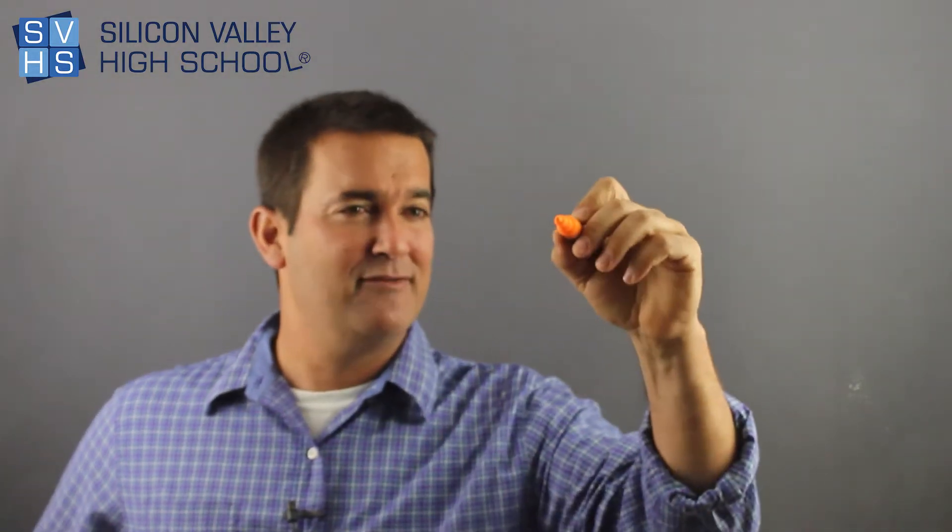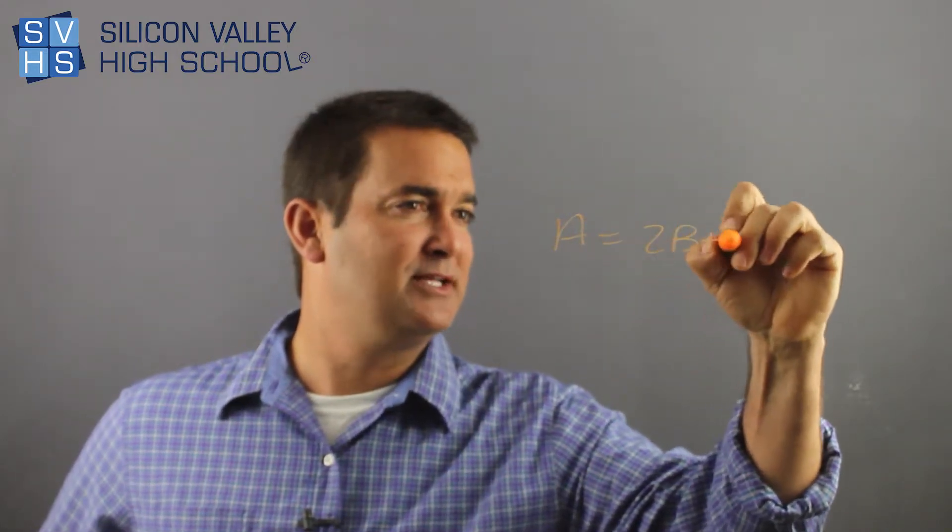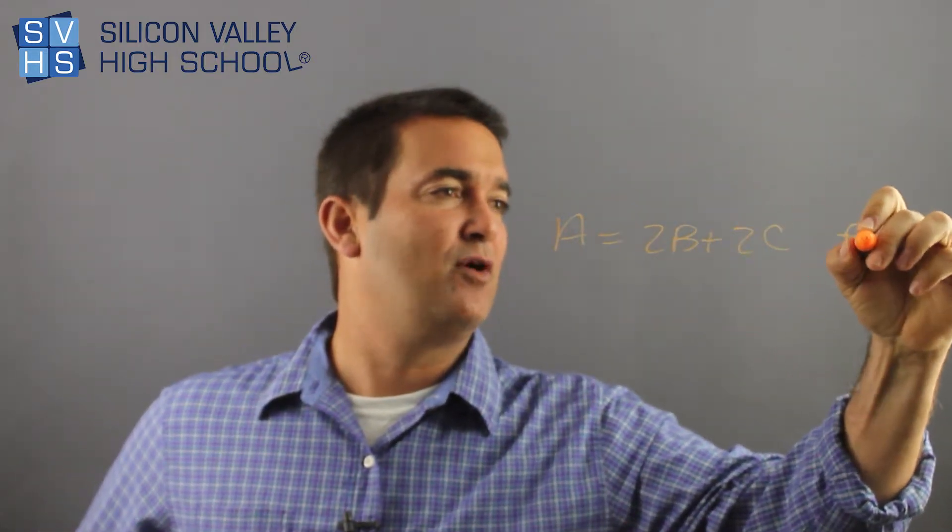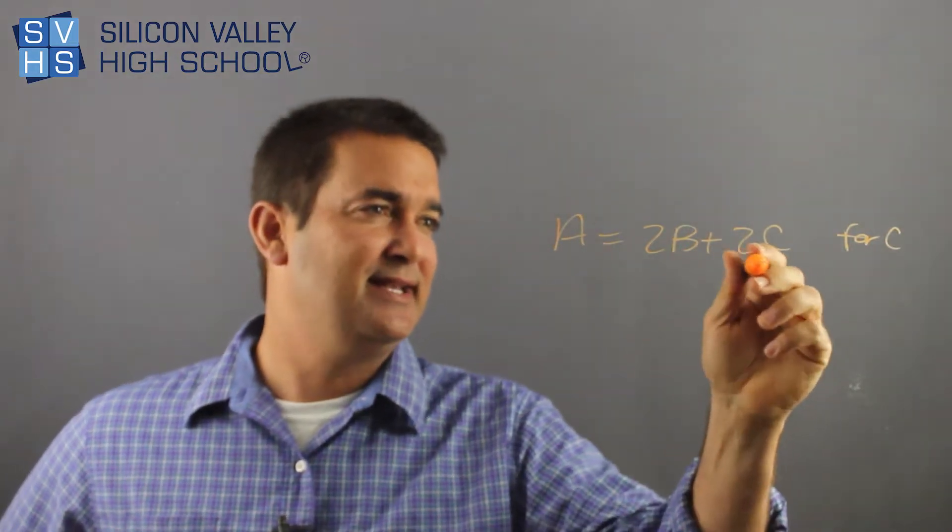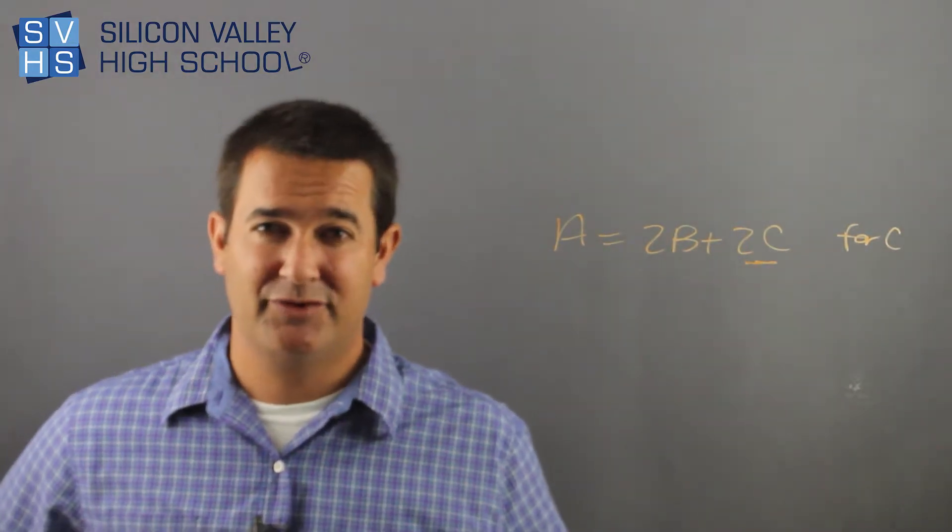Look at this sucker. So you have A equals 2B plus 2C. Solve for C. So you probably know what to do. This, I need to get this alone as fast as possible, the two out of there.